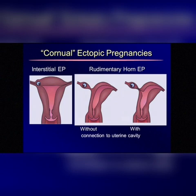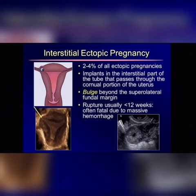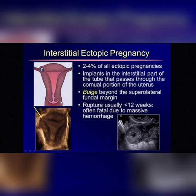So let's look at the corneal ectopic pregnancies. The interstitial ectopic pregnancy occurs in two to four percent of all ectopic pregnancies. The conceptus implants in the interstitial part of the fallopian tube that passes through the corneal muscular portion of the uterus. It creates a bulge in the supralateral fundal margin.